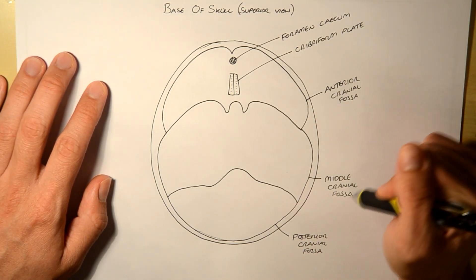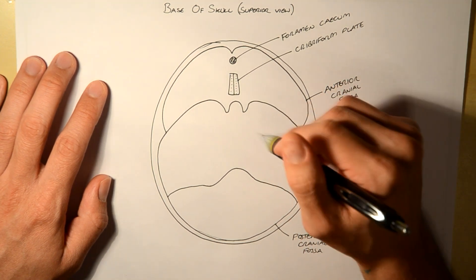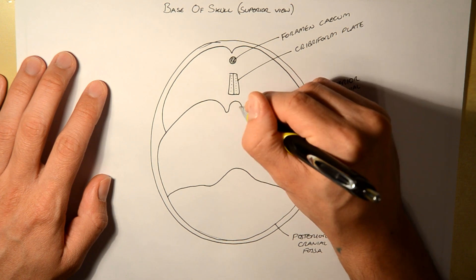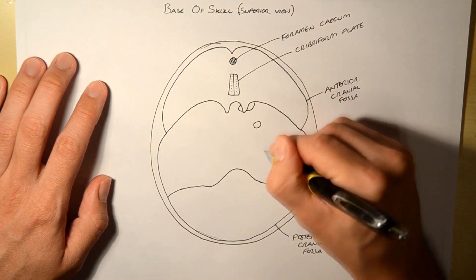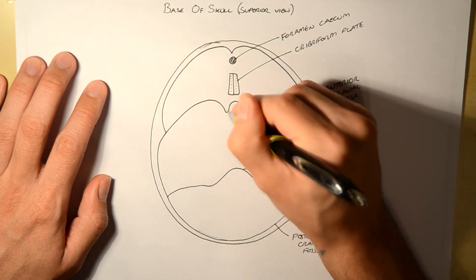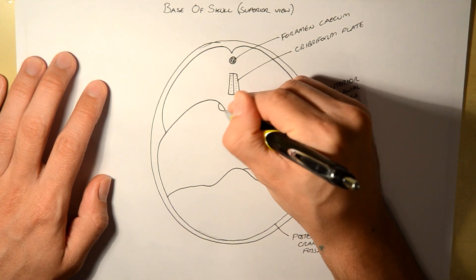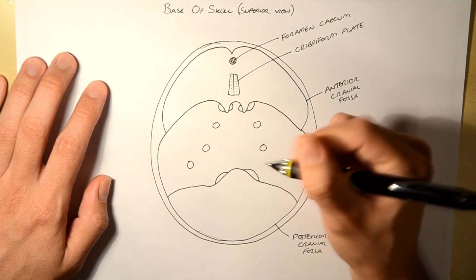The next is the middle cranial fossa. A little bit more tricky. I find an easy way to remember it is by drawing six different circles. So here, one, two, three, four, five, six. Again, one, two, three, four, five, and six.